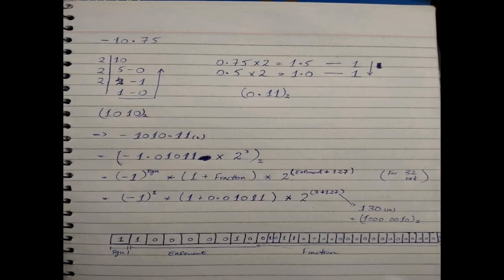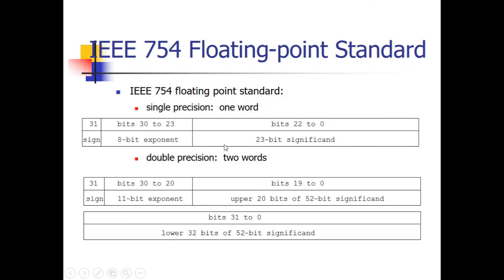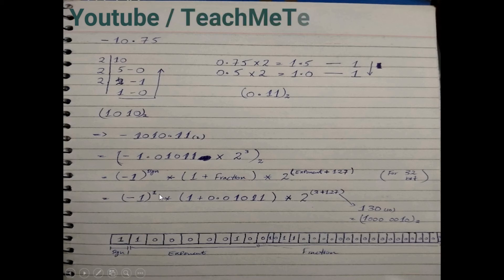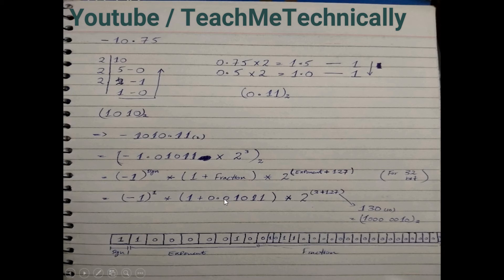Now we place all the binary values into the 32-bit single precision format. The sign bit is 1, placed at the most significant bit. The next 8 bits for the exponent are 10000010. The remaining 23 bits are for the fractional part: we write 01011 and then pad all remaining bits with zeros to fill the 23-bit field.